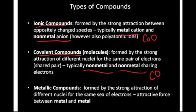Finally, metallic compounds are formed by the strong attraction of different nuclei for the same sea of electrons in which they reside. This attractive force is between the metals, all sharing the same electrons. For example, if you see a chunk of pure silver, you see that it's a solid and know that the individual silver atoms are bound to one another by something called a metallic bond. So we have ionic compounds, covalent compounds, and metallic compounds — or metallic elements.